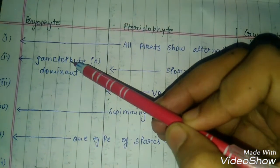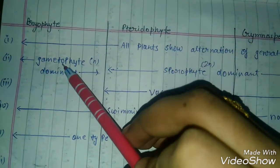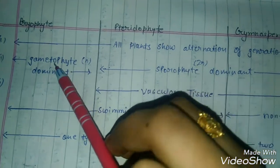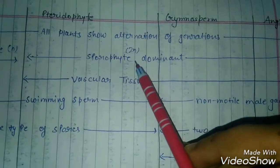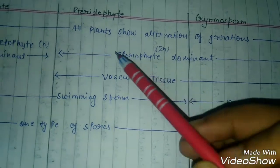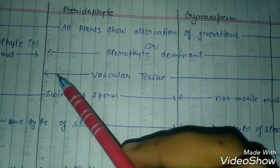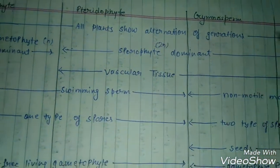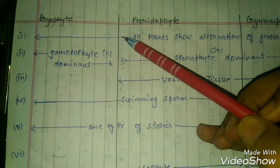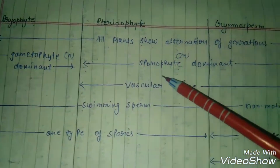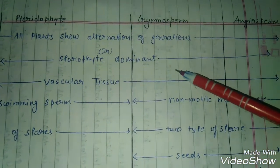What is the dominant body? In bryophyte, the dominant body is gametophyte in n condition, meaning haploid condition. Sporophyte 2n condition is dominant in pteridophyte, gymnosperm, and angiosperm.